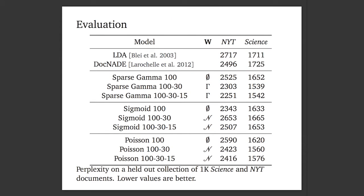We evaluated this to see how well we can predict held-out documents — observe some part of the document and predict the rest. We compared the sigmoid belief network, another version with Poisson distributions, a topic model, and a neural density estimator. The takeaways are: more complexity helps, but the gain is decreasing. Adding more layers helps, but that gain diminishes. Inference in the multi-layer versions is actually hard. Perplexity is a function of log-likelihood of held-out words — smaller number is better.